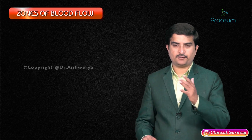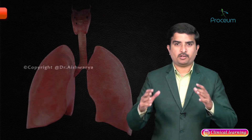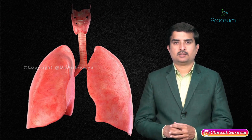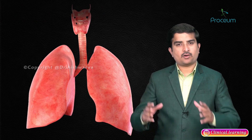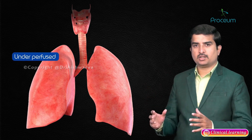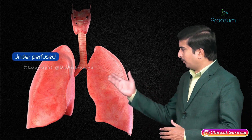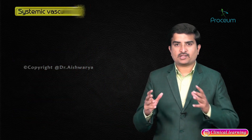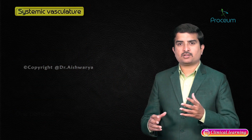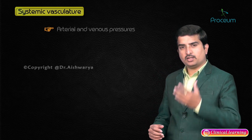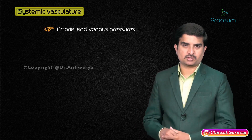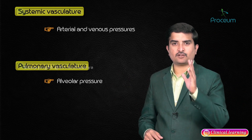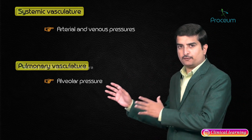Zones of the pulmonary blood flow. In an upright position, when the effects of gravity are present, the lung apices are relatively underperfused and the lung bases are relatively overperfused because of gravity. In the systemic vasculature, the pressure gradients that trigger blood flow are the arterial and venous pressures, whereas in the pulmonary vasculature, the alveolar pressure is the major factor that governs blood flow.